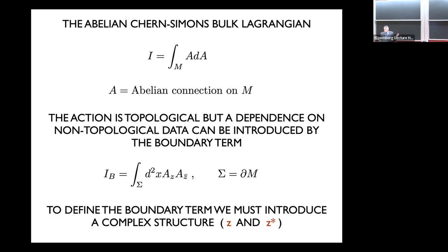Let me start from the beginning with abelian Chern-Simons theories. The bulk Lagrangian is as topological as it gets — no trace of the metric — with an abelian connection. I'm looking at a handlebody. There is no metric data in the bulk, but metric data can be introduced by choosing appropriate boundary terms. For instance, one can choose a boundary term I_B defined on the Riemann surface Σ that is the boundary of the handlebody M. The gauge group is U(1) with some even level k.